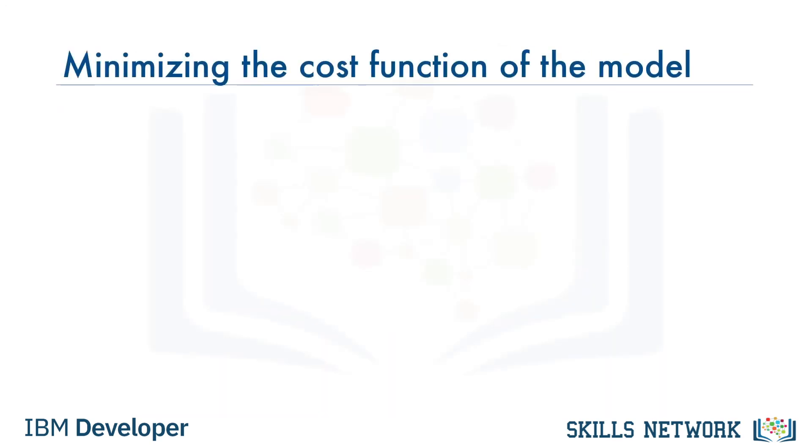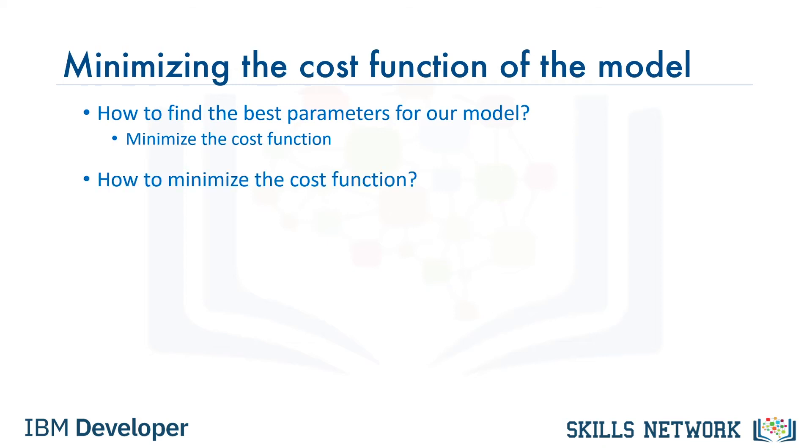Okay, let's recap what we've done. Our objective was to find a model that best estimates the actual labels. Finding the best model means finding the best parameters theta for that model. So, the first question was, how do we find the best parameters for our model? Well, by finding and minimizing the cost function of our model. In other words, to minimize the J of theta we just defined. The next question is, how do we minimize the cost function? The answer is, using an optimization approach.